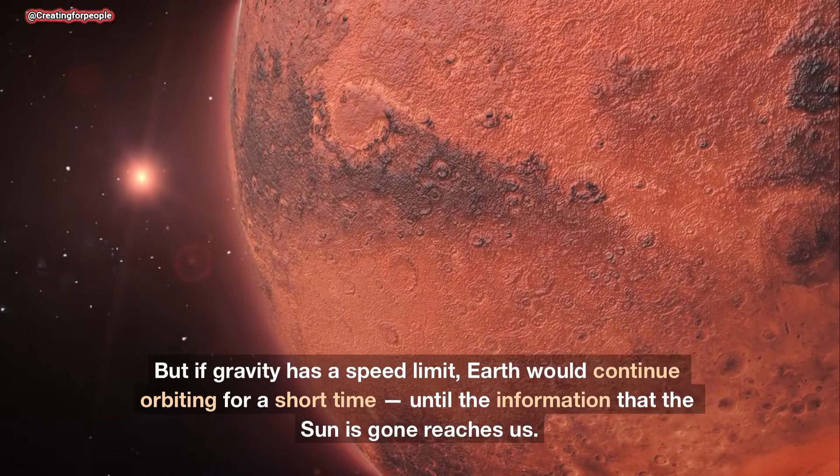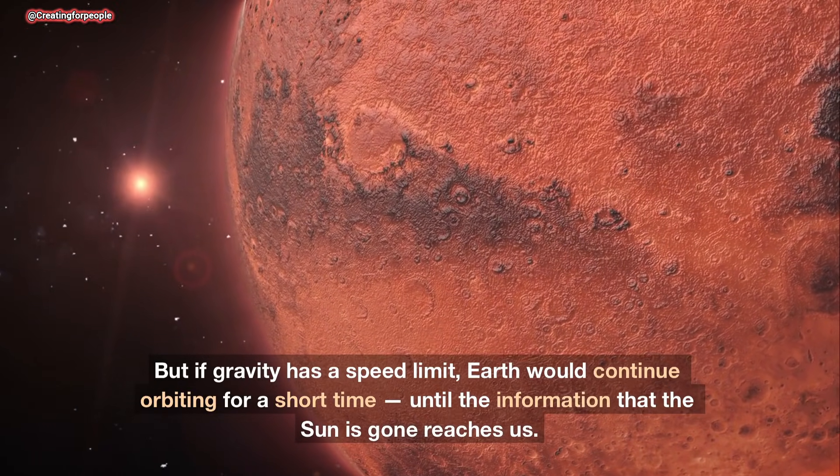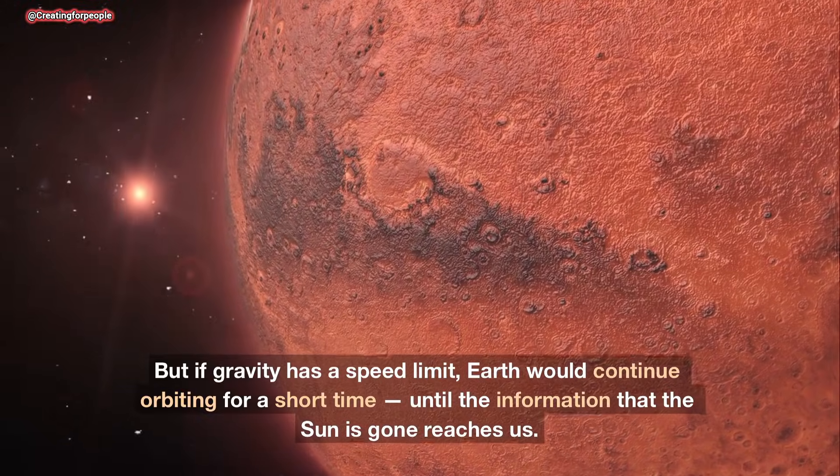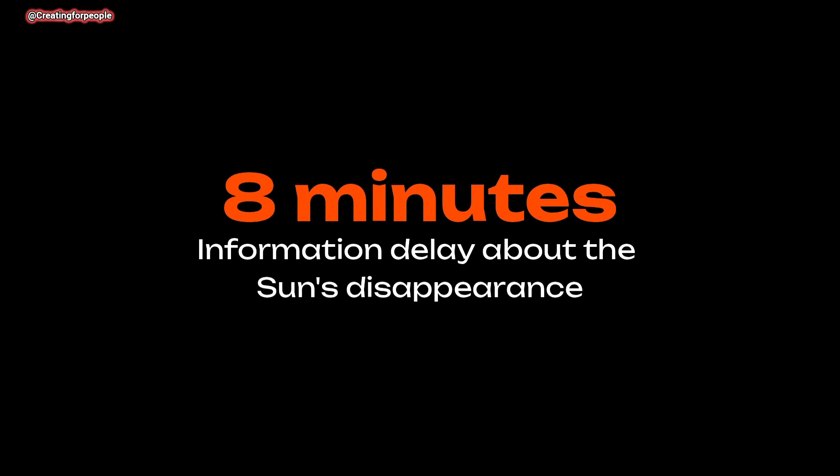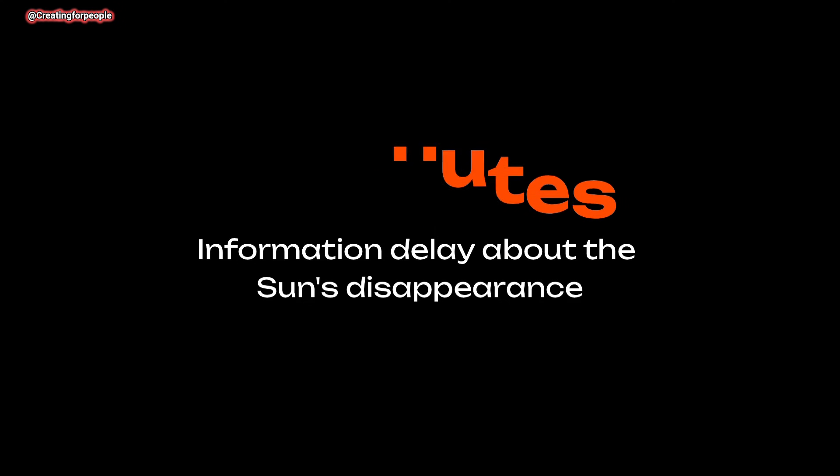But if gravity has a speed limit, Earth would continue orbiting for a short time until the information that the sun is gone reaches us. That delay should be about eight minutes, the same time it takes sunlight to reach Earth.